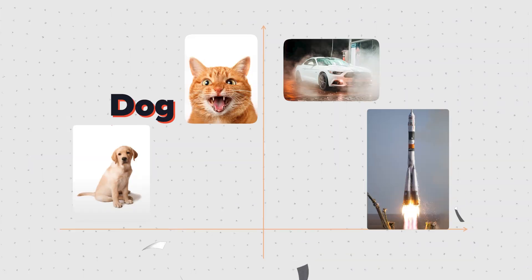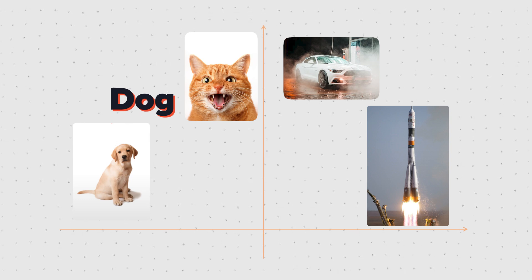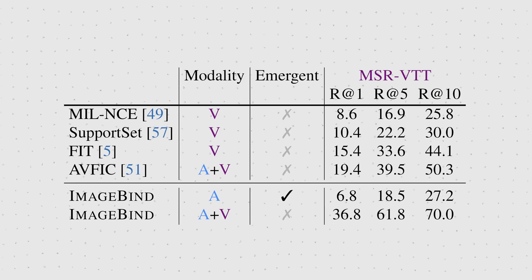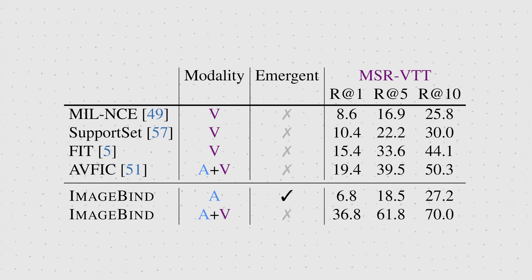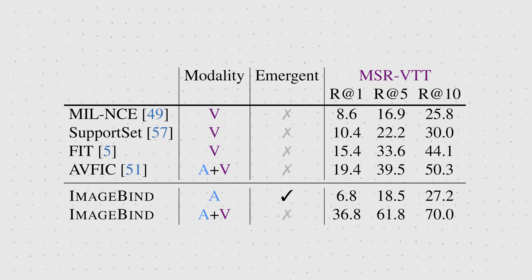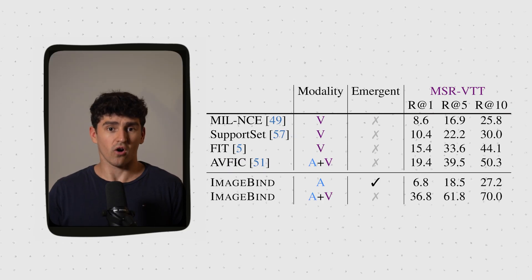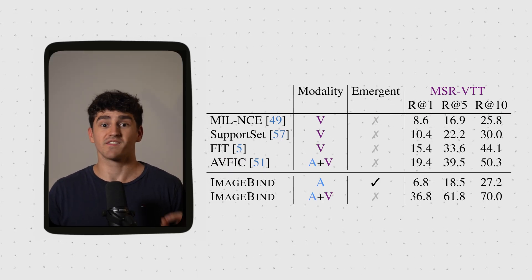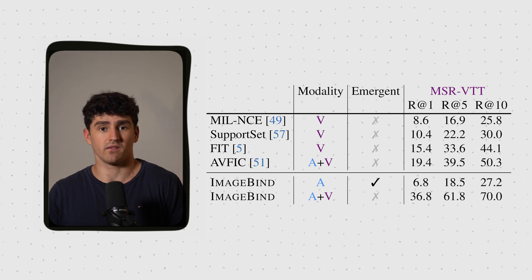We can also look at normal zero-shot text-based video retrieval — embeddings for videos in a database, and given a text query and its embedding, retrieve the video with the most similar embedding. Most techniques only use visual data for generating embeddings, but one could also use the audio embedding of the video as done with ImageBind. Using text to audio alone is an emergent capability but does not perform best, though it is better than MILNCE for R@5 and R@10. When combining the audio embedding with the vision embedding, the performance skyrockets.